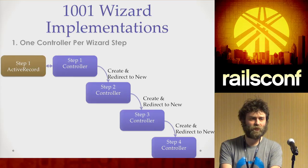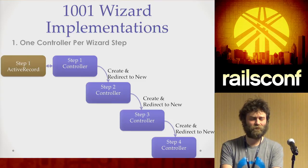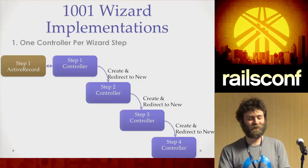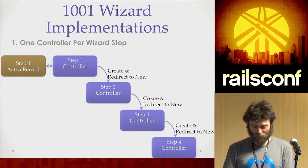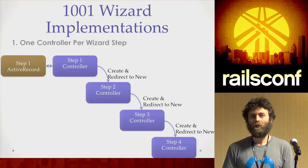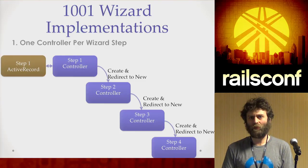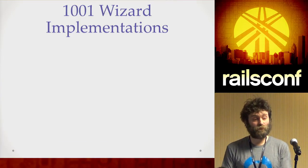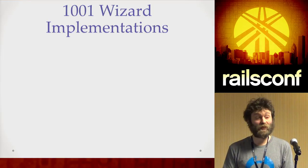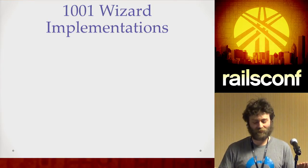I ended up solving the problem with another senior developer, applying this ultralight maintainable wizard approach that I'd discovered on the EarlyShares.com project. It worked out really well — it helped us develop it in about seven days, test-first, rewriting the entire thing. It was specifically because we didn't have that many controllers anymore. We wrote a lot less tests, so we had a lot less code to maintain.